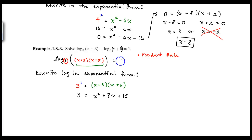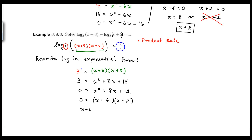Since I have x squared, this equation is quadratic. I'll get 0 on one side by moving the 3 over to the right, giving 0 equals x squared plus 8x plus 12. Then I factor: two factors of 12 that add up to 8 are plus 6 and plus 2. I set each factor equal to 0.